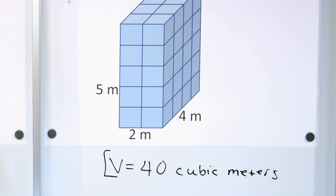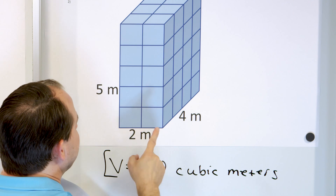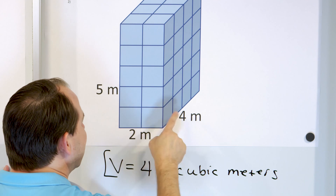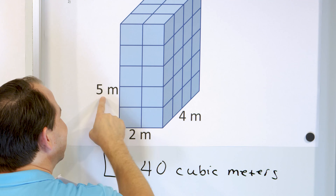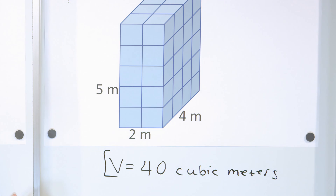That's the final answer. Now, remember, I told you you can get the volume by multiplying. Two times four is eight, eight times five is 40. So the formula holds: length times width times height.